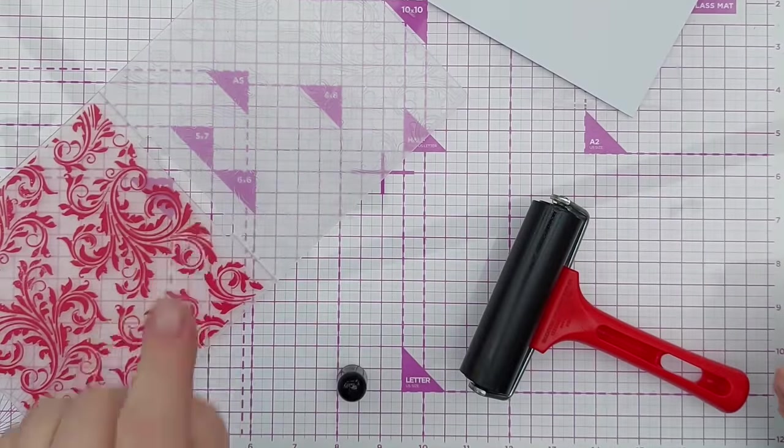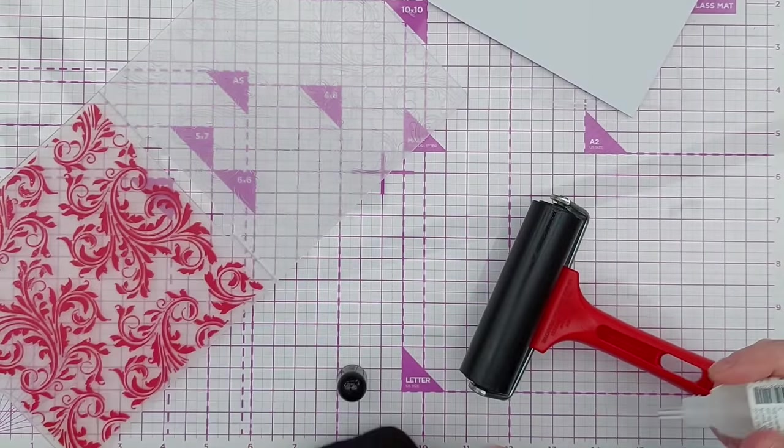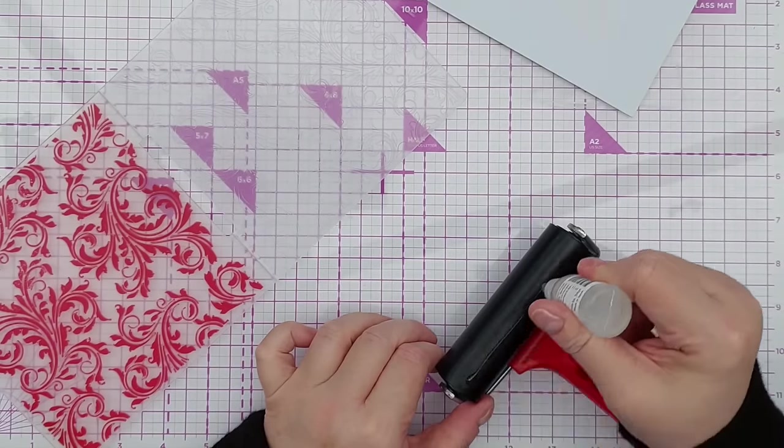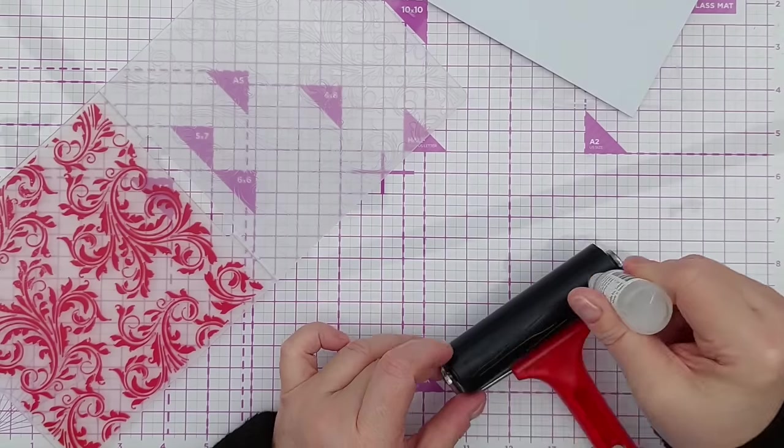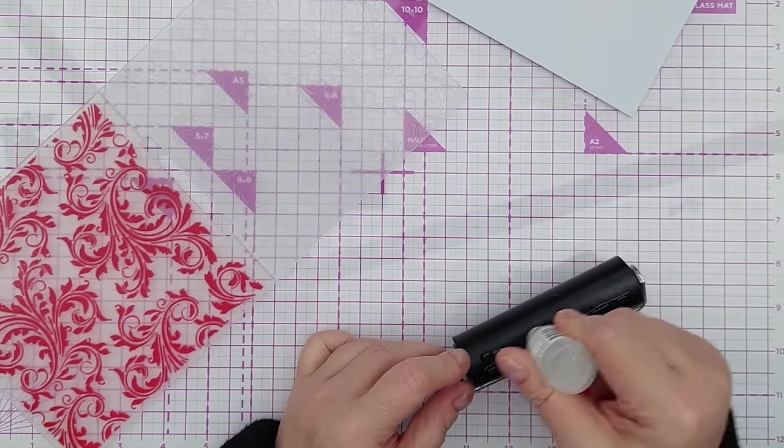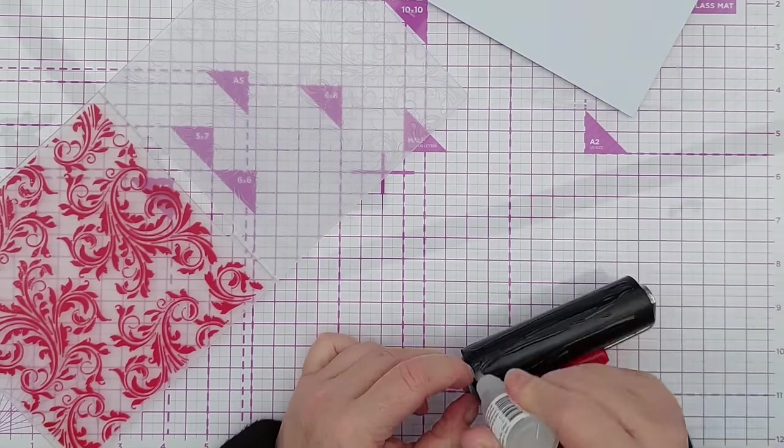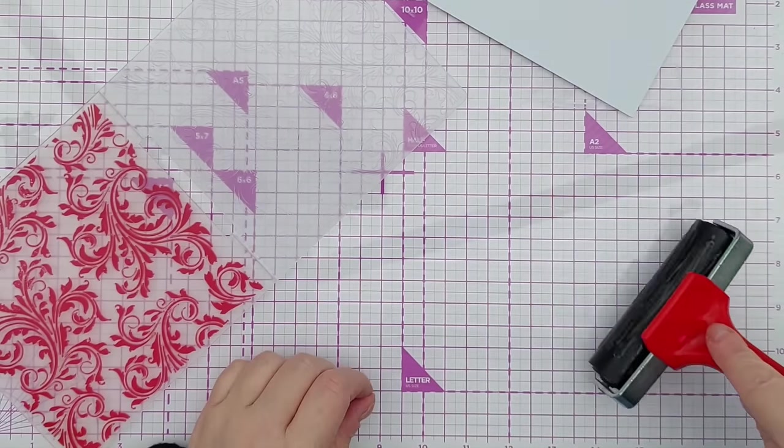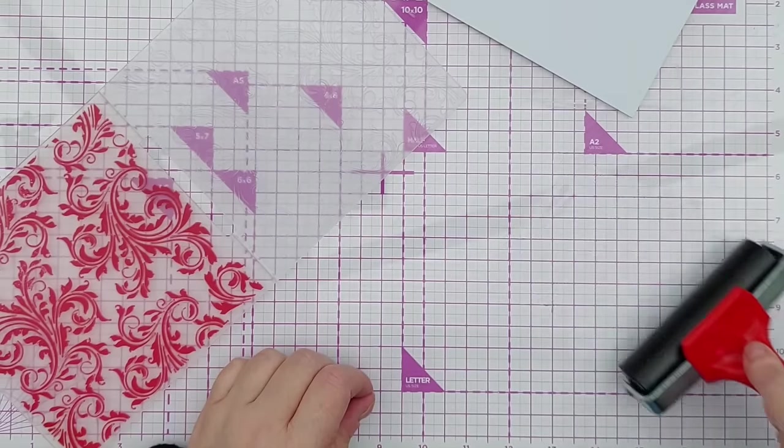I've got a reinker here and I'm going to put it on this brayer all the way round, roll it so it's got a good even coverage on my brayer.